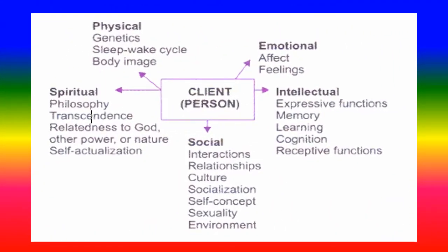Look at this picture. The diagram includes: Physical — including genetics and neuroendocrinal aspects; Emotional — affect and feelings; Intellectual — including expressive functions, memory, learning, and cognitive processes, as well as receptive functions and perception; Social — interactions, relationships, culture, socialization, self-concept, sexuality, and environment; and Spiritual — including philosophy, relatedness to God or other power, and self-actualization.